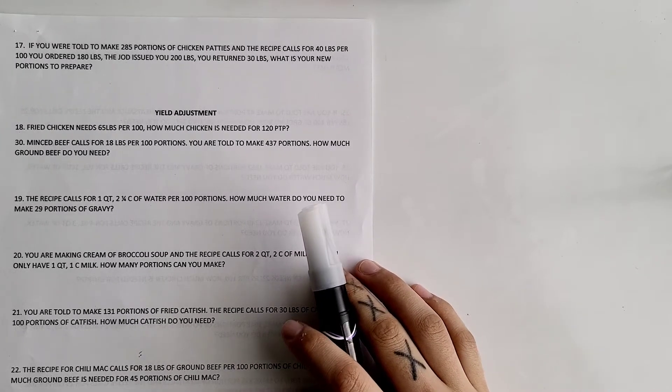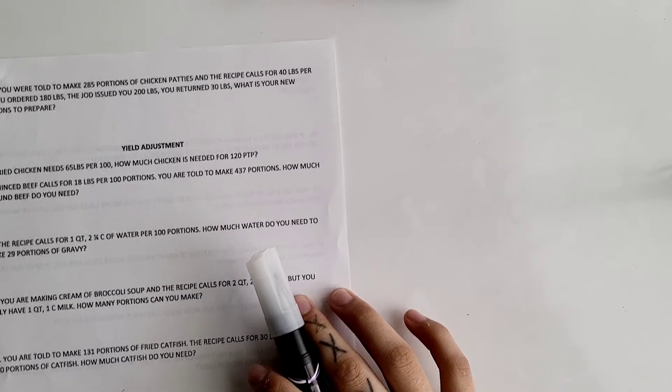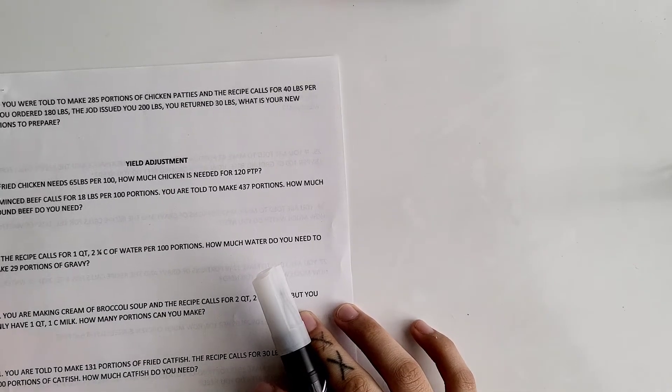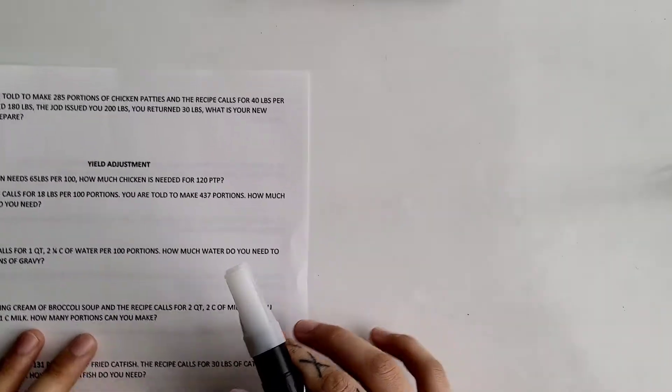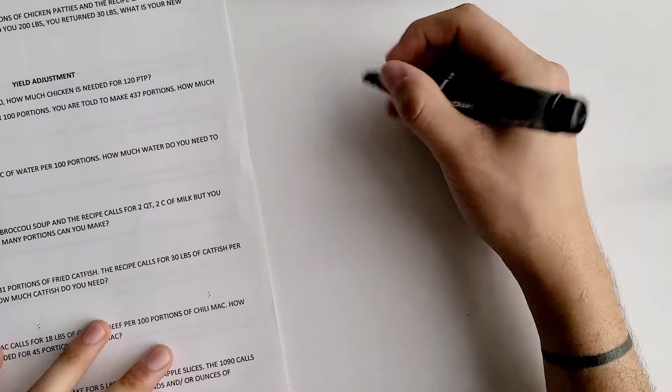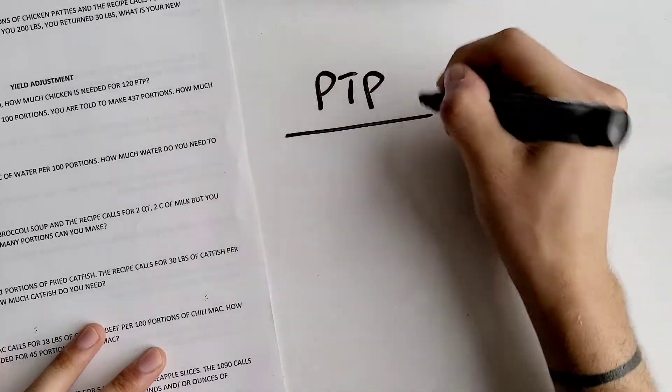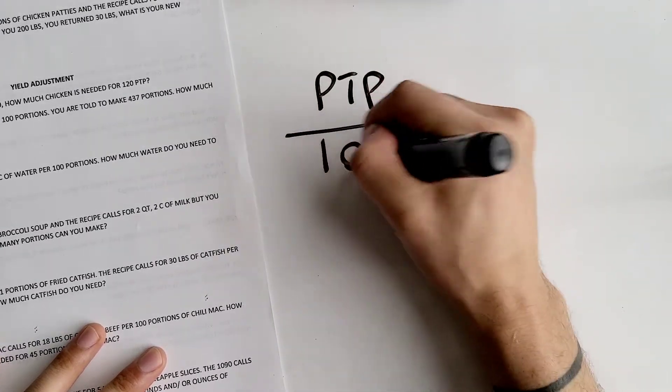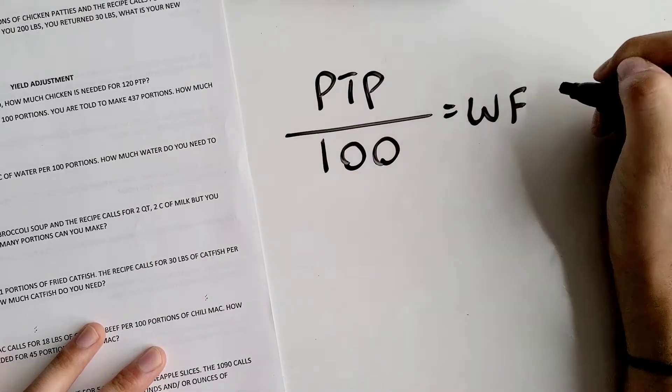Hey everyone, today we'll be going over some yield adjustment recipe conversions. When it comes to these yield adjustment recipes, the first thing you want to find is your working factor. The formula for that is your PTP, your portions to prepare, divided by 100, and that's how you get your working factor.